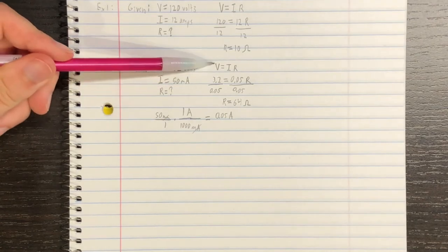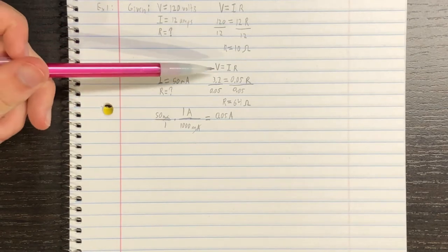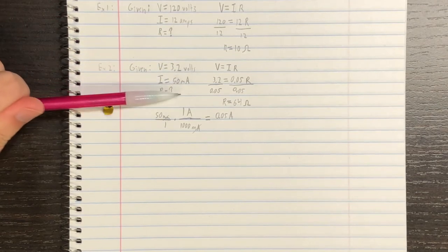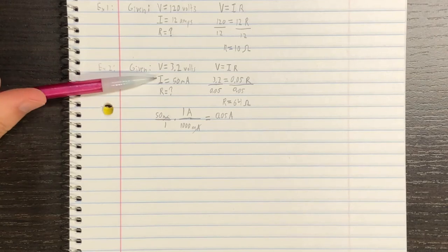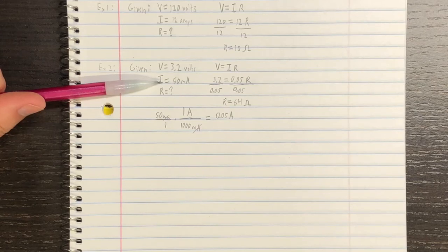We can find this using Ohm's Law. V is equal to IR. But before we can start using this, we first must double check that all these units are in the correct form. And the amperage, in this case, is not. Because it is in milliamps right now. And we must convert this into amps.